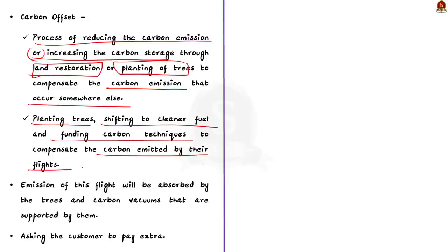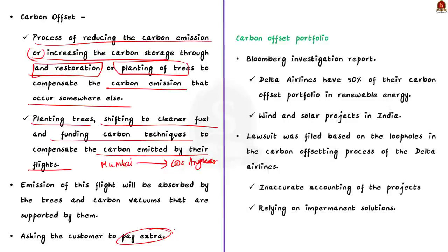Carbon offsetting activities by Delta Airlines include planting trees, shifting to cleaner fuel, and funding carbon techniques to compensate for the carbon emitted by their flights. A round-trip flight from Mumbai to Los Angeles creates about 4.8 tons of carbon dioxide. Delta Airlines says they will absorb the carbon emitted by this flight through trees they support, but ask customers to pay extra. When we look at Delta's carbon offset portfolio, their efforts to offset carbon emissions may not be as effective as they claim.